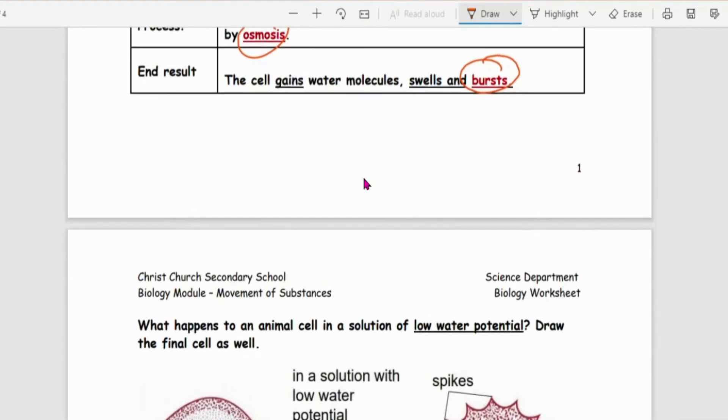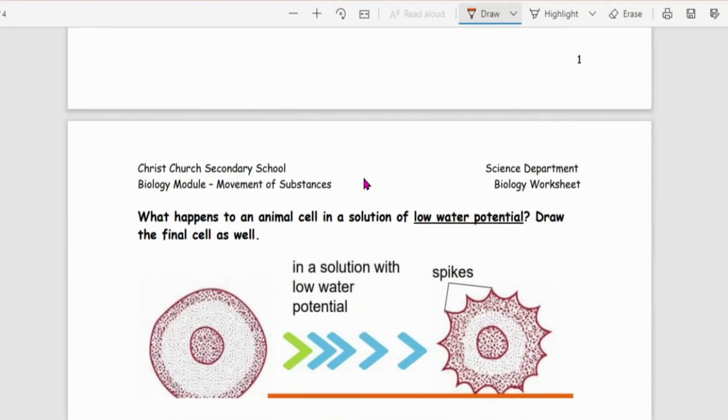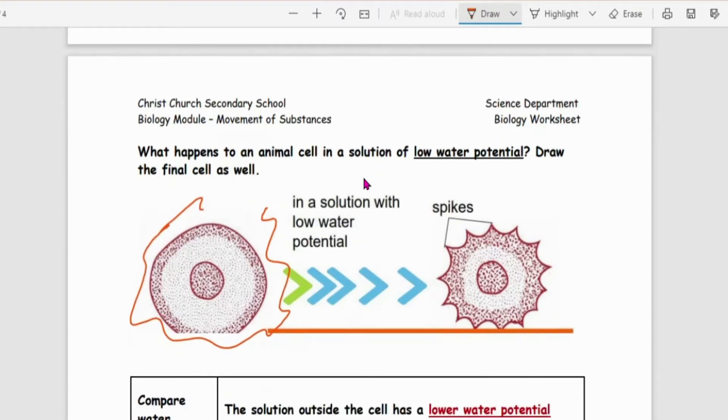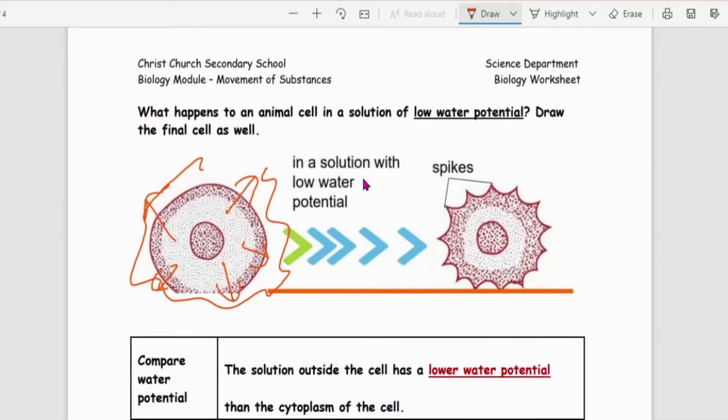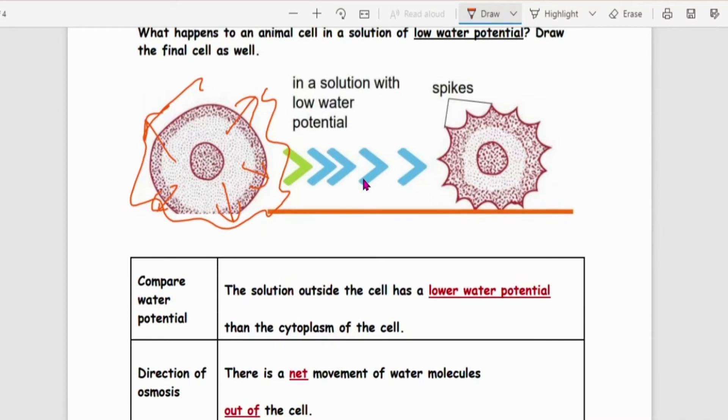Next one. Place in a solution. Animal cell in low water potential. So outside is low water potential. So obviously at this time around, you know water is going to come out. A bit different from the first one. So comparing water potential, outside has lower water potential.